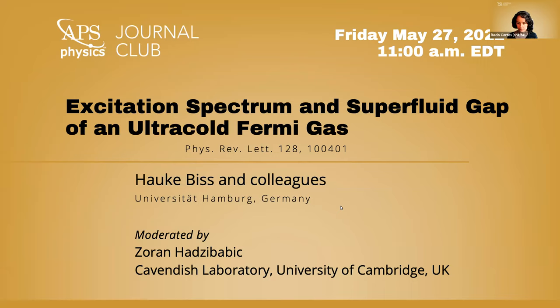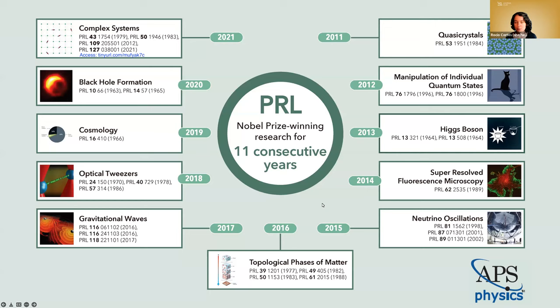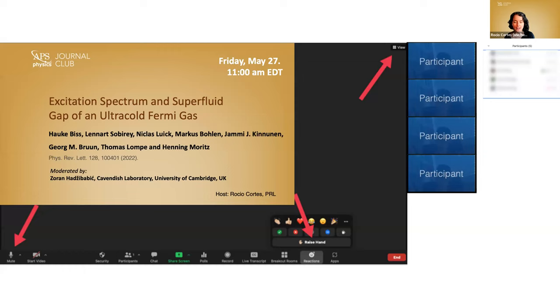Before we start, I would like to share something we are very proud about here in PRL. In the last 11 years, at least one PRL paper has been cited by the Nobel Committee as directly related to the Nobel Prize in Physics or Chemistry. It's a trend that we will see if it continues also this year. So if you're publishing in PRL, you are in very good company.